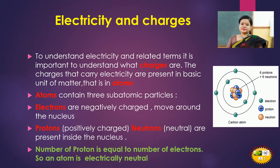Here you can see the structure of an atom. Inside the nucleus, there are positively charged protons and neutral neutrons. Surrounding the nucleus, electrons revolve around some fixed orbits. In an atom, the number of protons equals the number of electrons, meaning the number of positive charges equals the number of negative charges. As shown here, there are six protons, six neutrons, and six electrons, so an atom is electrically neutral.